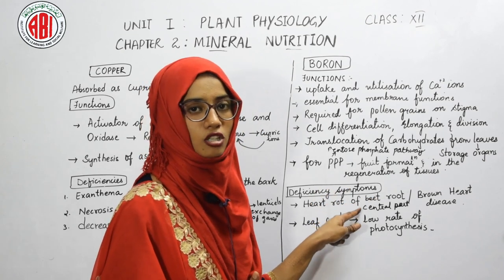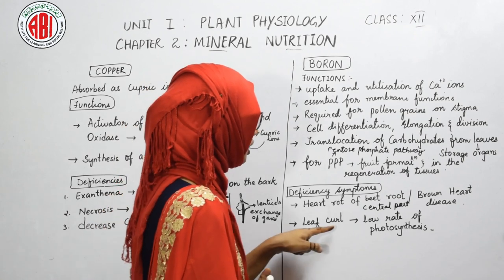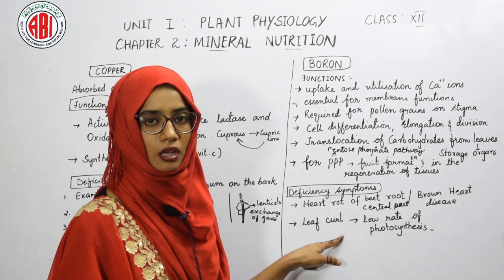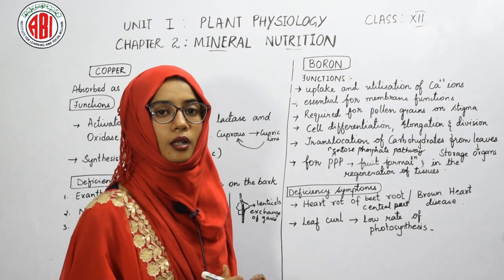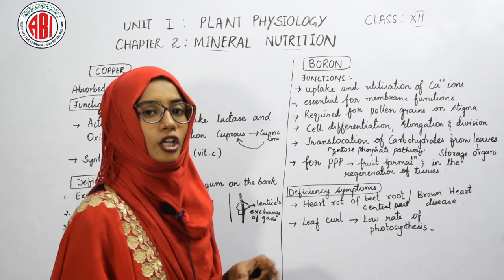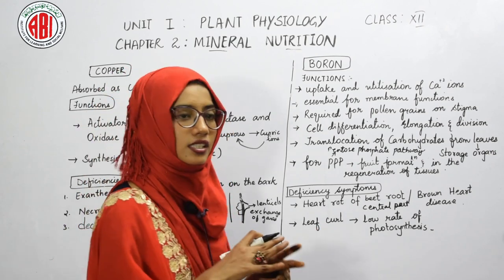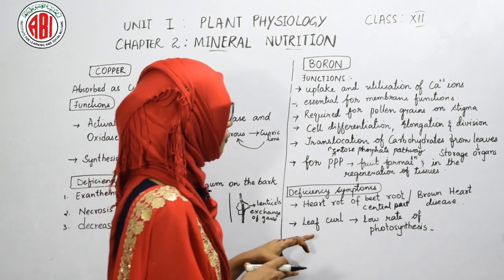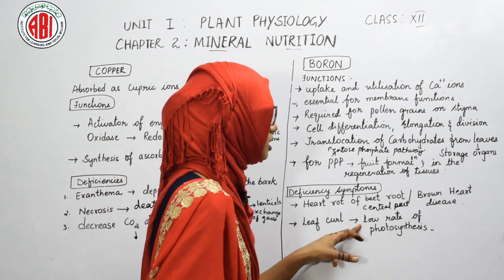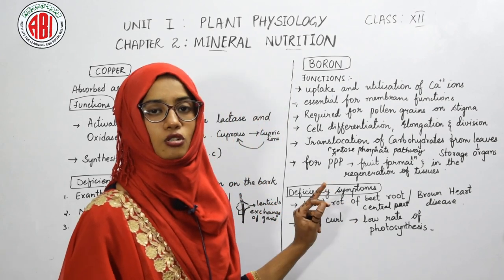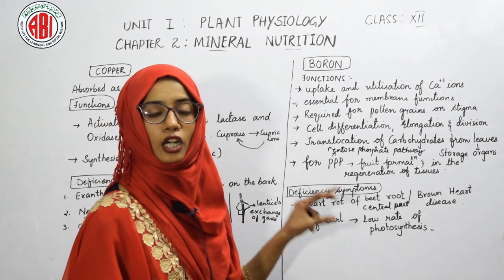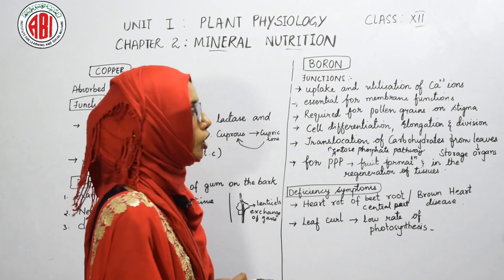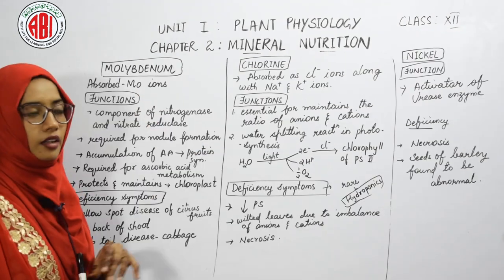Another deficiency symptom of boron is leaf curl disease, seen in many plants. As the name suggests, the leaf rolls up or becomes curled, reducing the surface available for photosynthesis. This lowers the rate of photosynthesis and affects carbohydrate production.